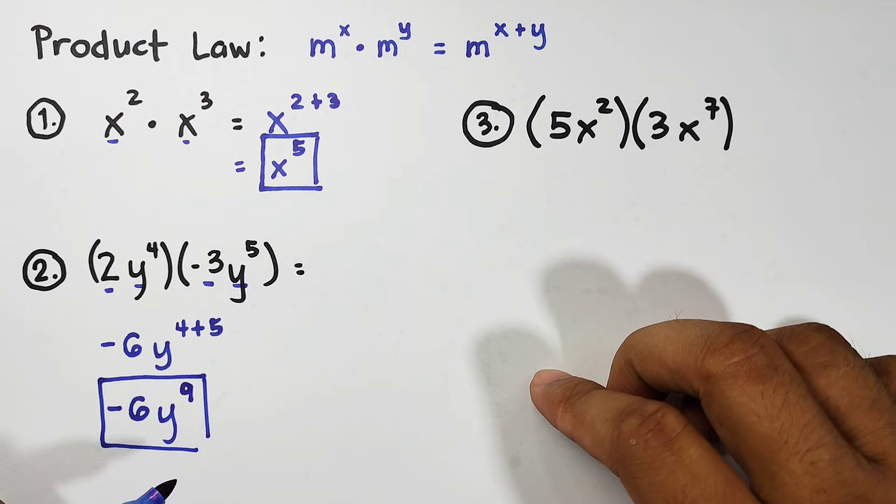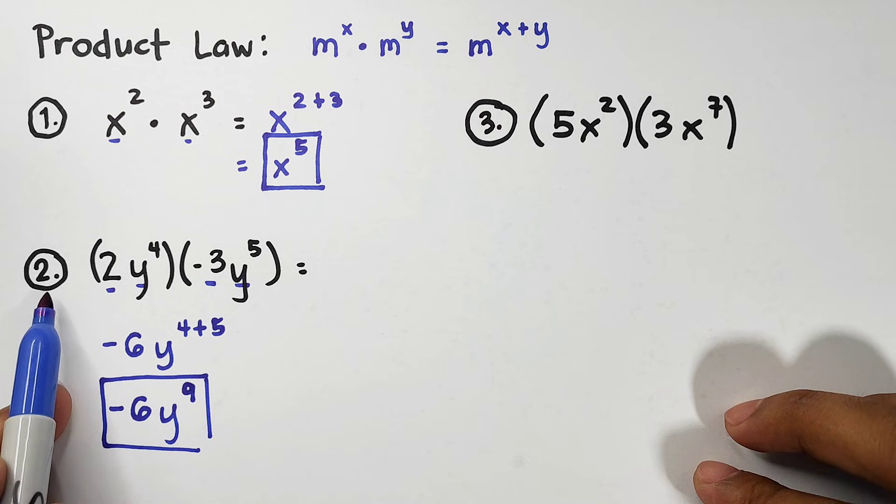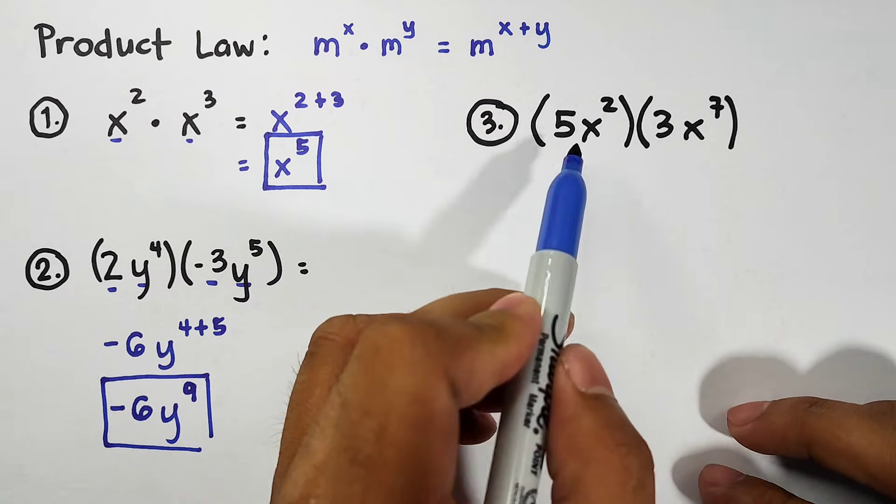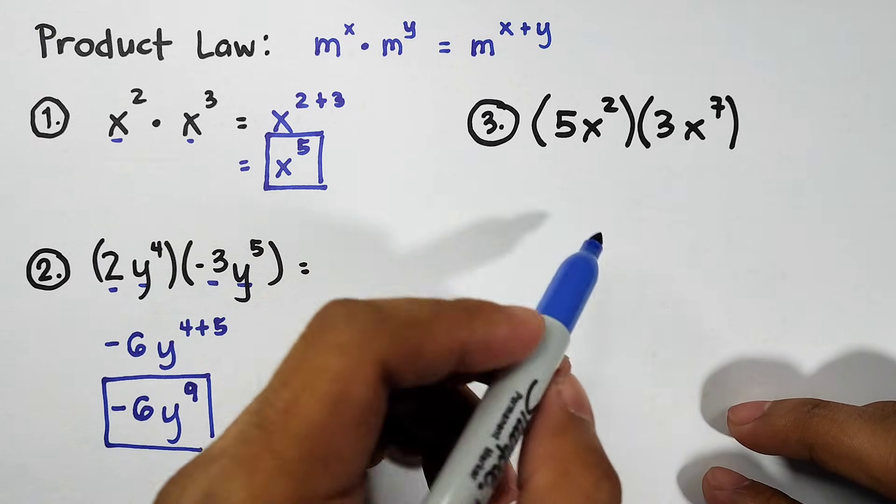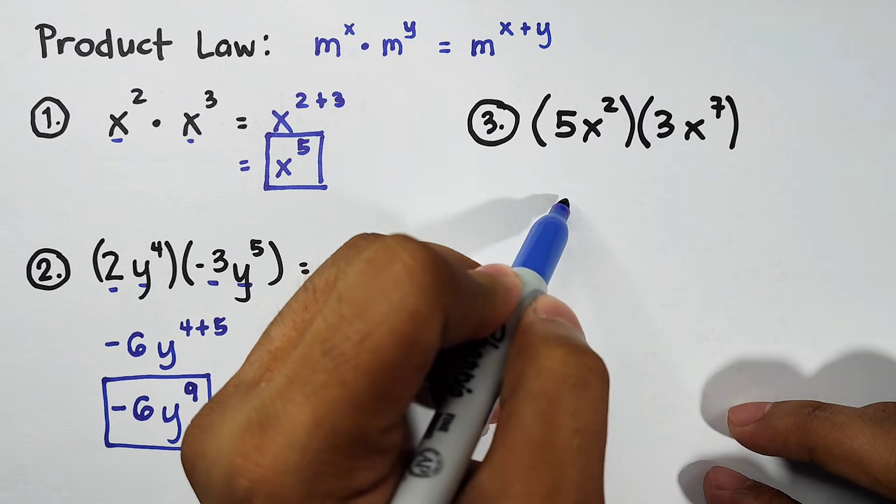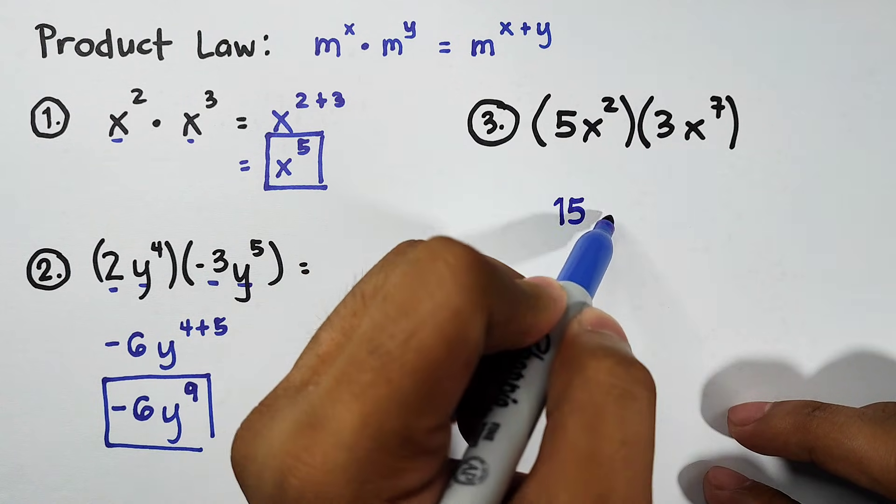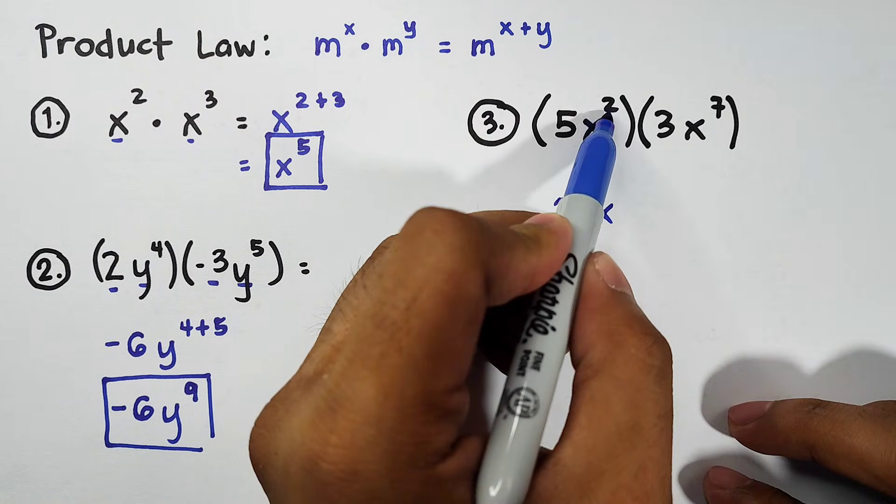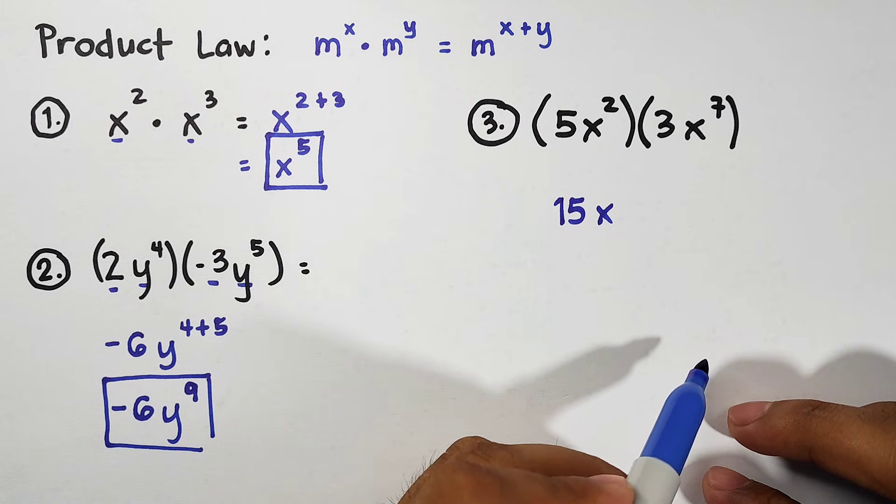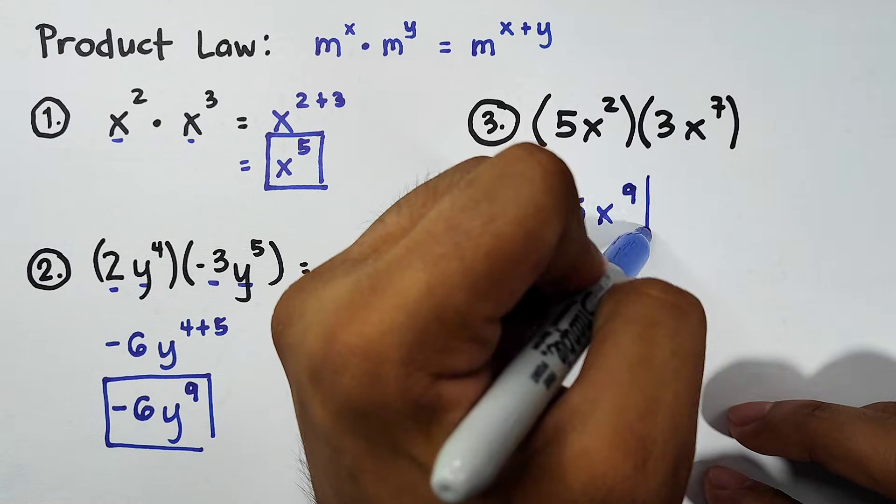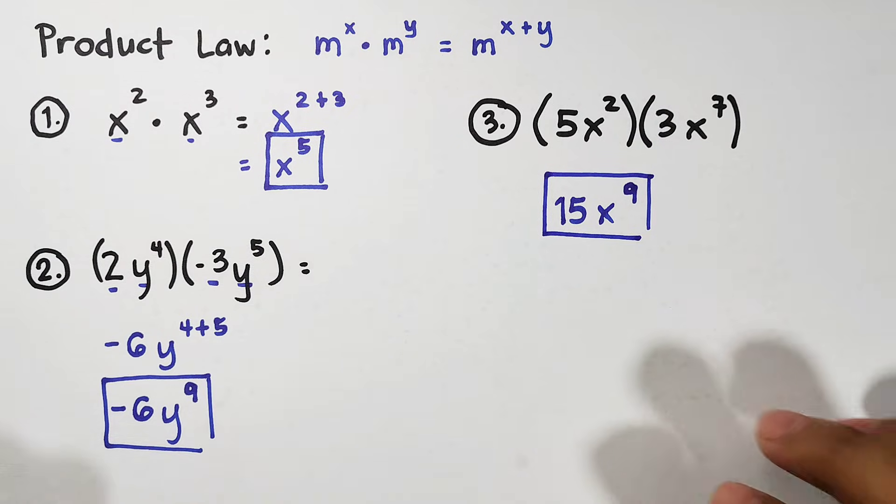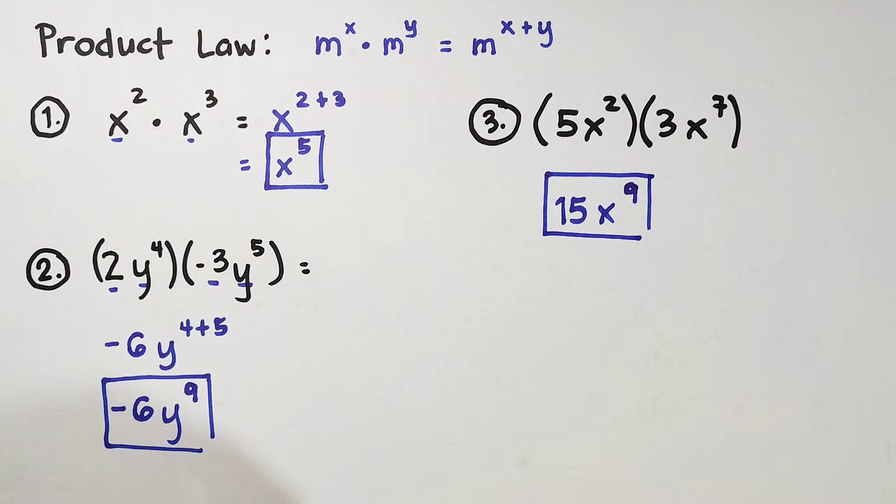So, let's continue with item number 3. For number 3, same thing about number 2. We have 5x squared times 3x to the seventh power. So, let's do this in a faster way. 5 times 3 is 15. Then, for the variable x, copy. Then, you have 2 plus 7. Again, add exponents. That would give you the answer of 9. Meaning, the product of number 3 is simply 15x raised to the ninth power. So, let's continue with the next law. So, we are done with the product law. If you have any question about this, feel free to comment down below.